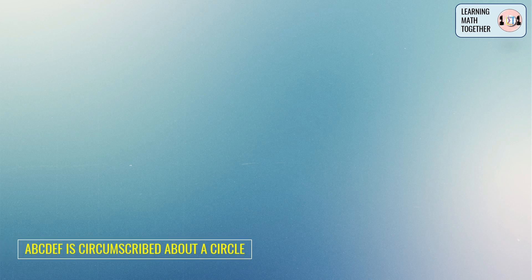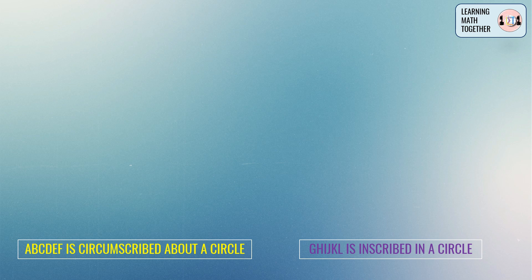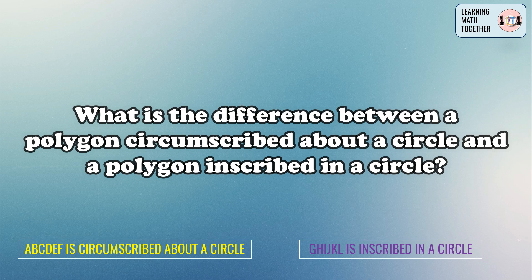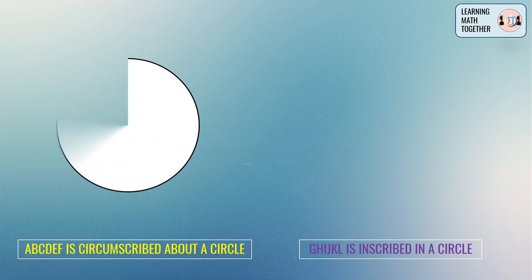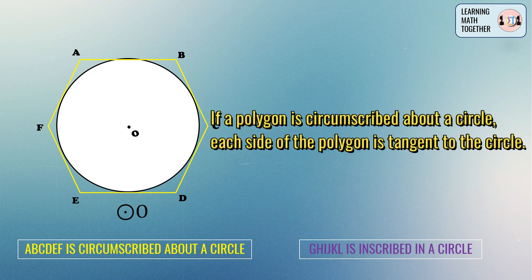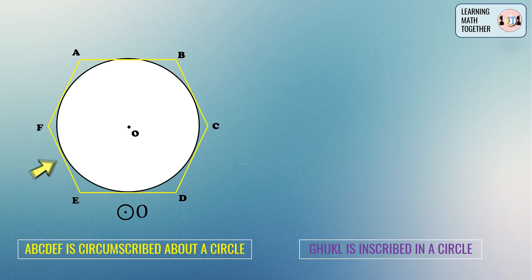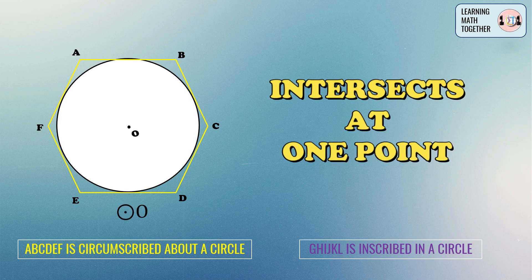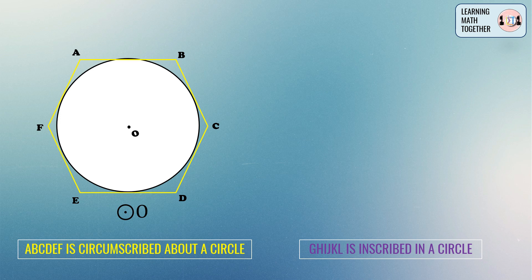Now let us discuss a polygon which is circumscribed about a circle. Let's draw a circle — we have circle O — and then draw a polygon outside the circle. This is actually a hexagon, so we name it using six capital letters: hexagon ABCDEF is circumscribed about a circle. If a polygon is circumscribed about a circle, all the sides are tangent to the circle, meaning each side of the polygon intersects the circle at exactly one point.